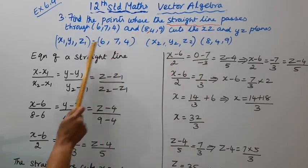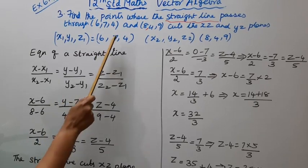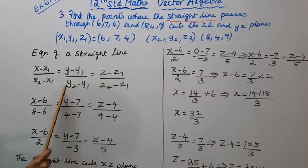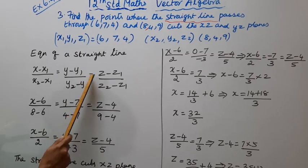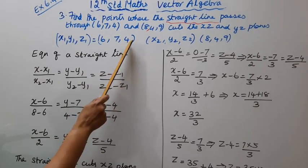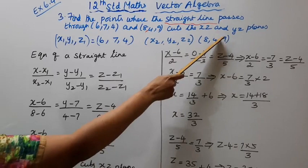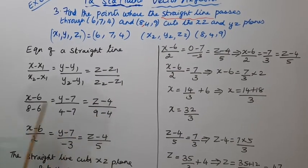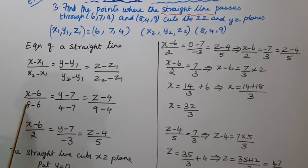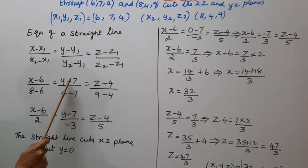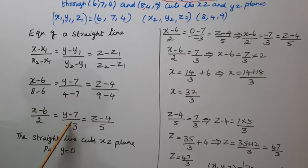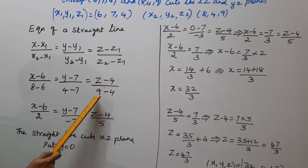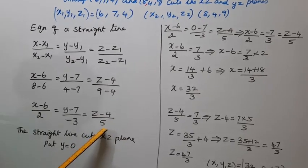Substituting: x minus 6 divided by 8 minus 6, equal to y minus 7 divided by 4 minus 7, equal to z minus 4 divided by 9 minus 4. This simplifies to x minus 6 by 2, equal to y minus 7 by minus 3, equal to z minus 4 by 5.